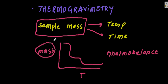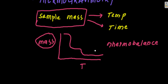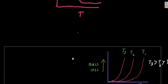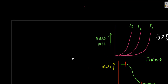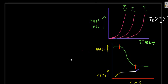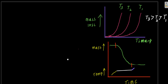There are different types of thermogravimetry, and these types are based on whether you are going to use a constant temperature or a changing temperature.